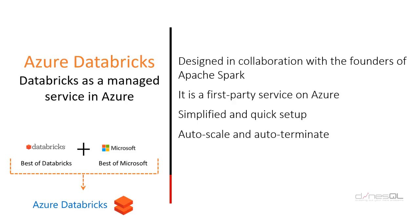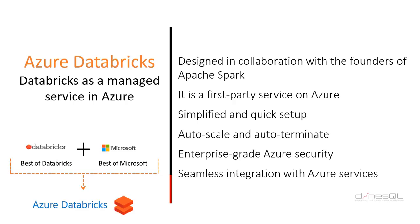Auto terminate is about getting your cluster shut down if no one is using it. You can set a time period — for example, after 120 minutes this cluster should be shut down if no one is using it within that timeframe. You can save money using this property as well. Azure Databricks can be completely integrated with Azure Active Directory, so enterprise-grade Azure security is available. Since it's available as a native Azure service, you can simply integrate with other Azure services to get your implementation done.